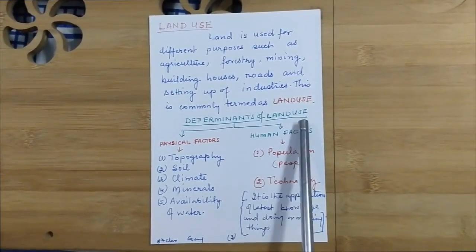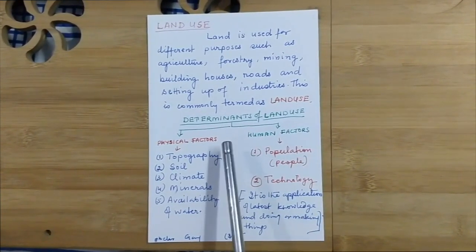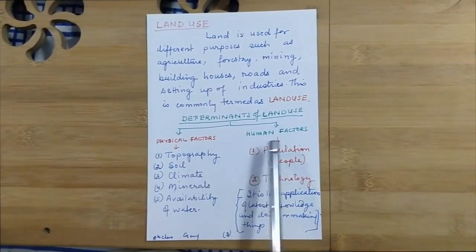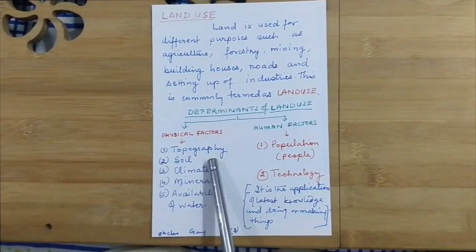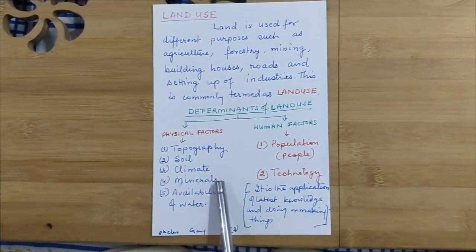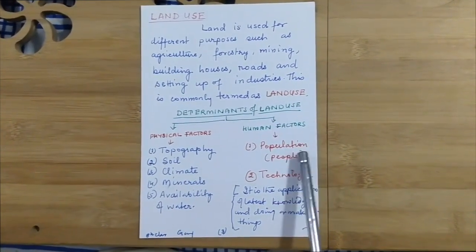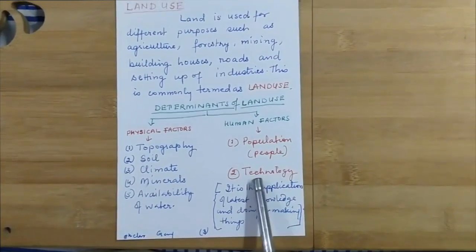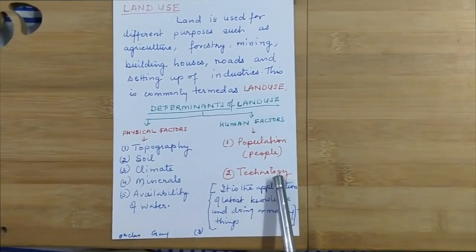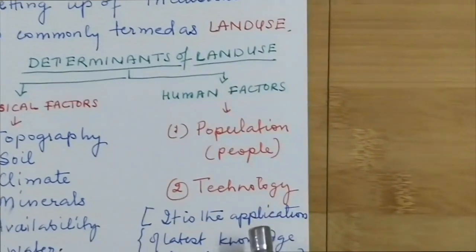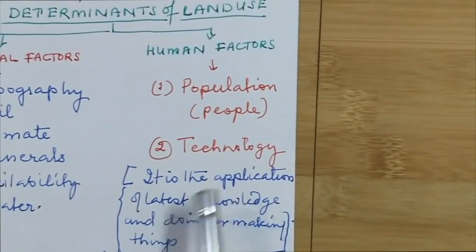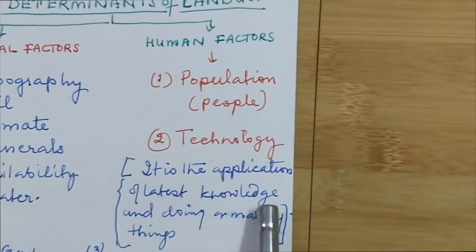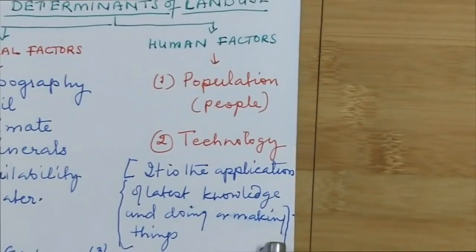What are the determinants of land use? There are two: physical factors and human factors. Physical factors are topography, soil, climate, minerals, and availability of water. Human factors are population and technology. Technology is the application of latest knowledge in doing or making things.